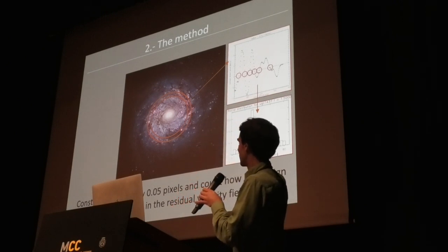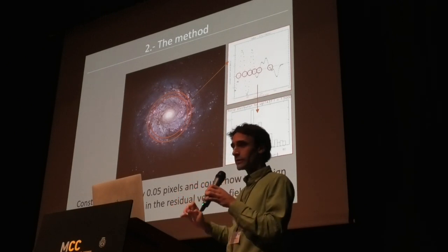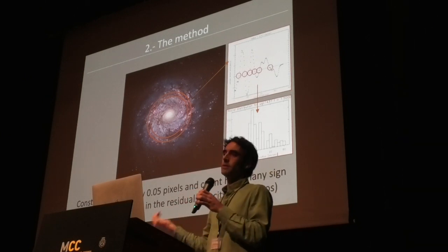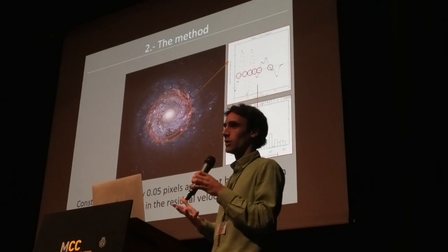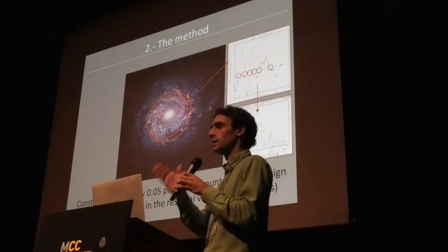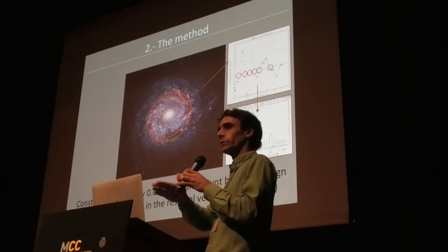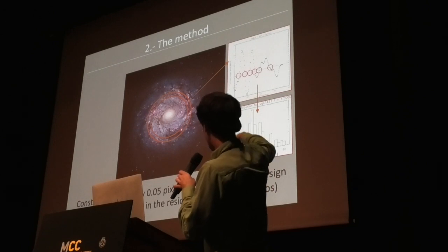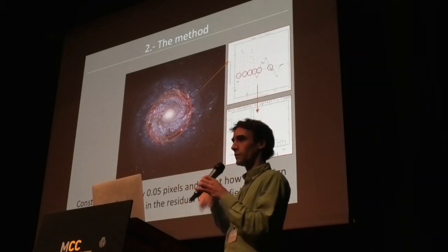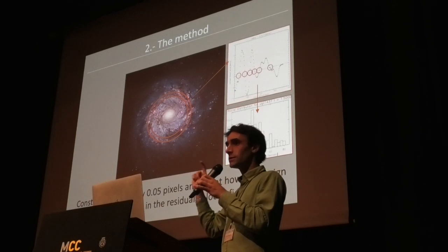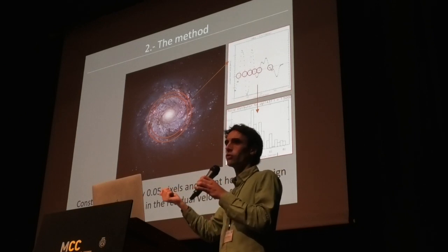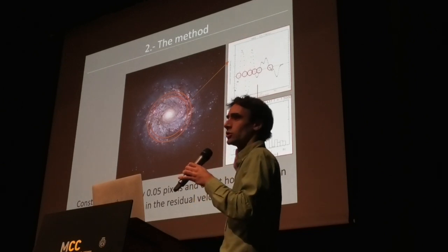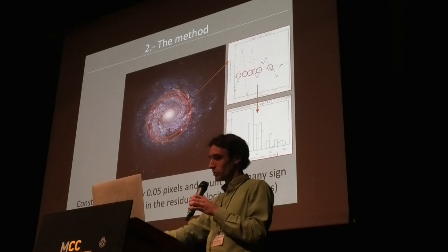At each radius, you draw an annulus and over that annulus you count how many times there is a change in sign. There is an expectation of a phase reversal taking place precisely at co-rotation, and also to a lesser extent at the inner and outer Lindblad resonances. Whenever there is a crossing from negative to positive or positive to negative larger than your velocity uncertainty, you count one crossing. You can then plot this radially to see how many crossings there are as a function of galactocentric radius — that's what you see in the bottom panel.